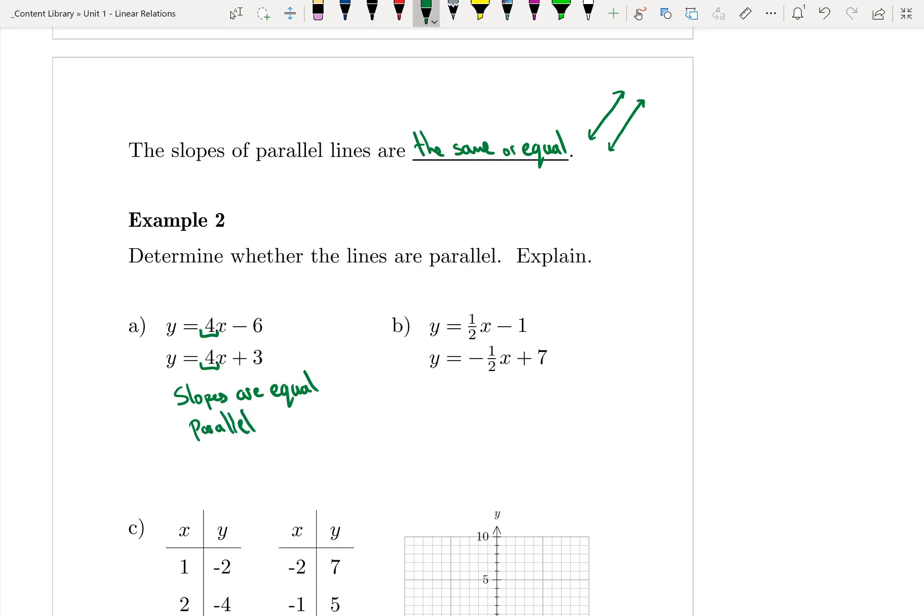If I look at example B, I see my slope is 1 half, and my other slope is negative 1 half. The slopes are not equal, which means they are not parallel.